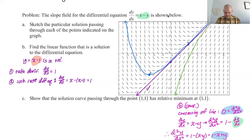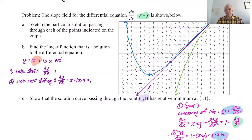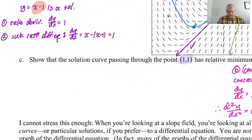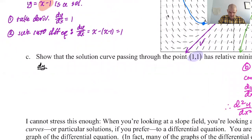Part C: show that the solution curve passing through the point (1, 1) has a relative minimum at (1, 1). We're going to try to show there's a relative minimum there. The first derivative test is a nightmare for these, but the second derivative test is usually straightforward. The differential equation gives dy/dx equals x minus y, so dy/dx at (1, 1) equals 1 minus 1, which equals zero.